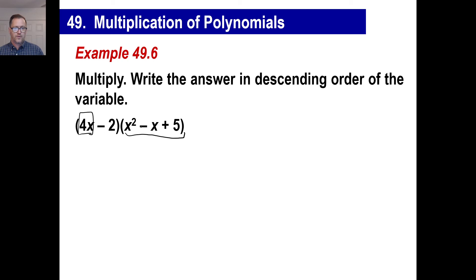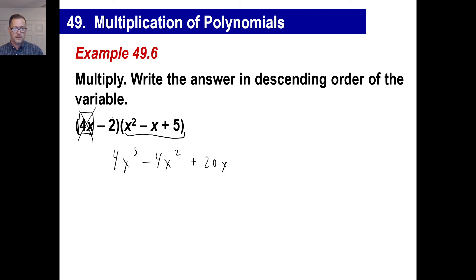Let's try 4x all the way across. 4x times x squared is 4x cubed. 4x times negative x is negative 4x squared. 4x times positive 5 is 20x. Now let's take the negative 2. Negative 2 times x squared is negative 2x squared. Negative 2 times negative x — negative times a negative is a positive — so positive 2x. And negative 2 times positive 5 is negative 10.